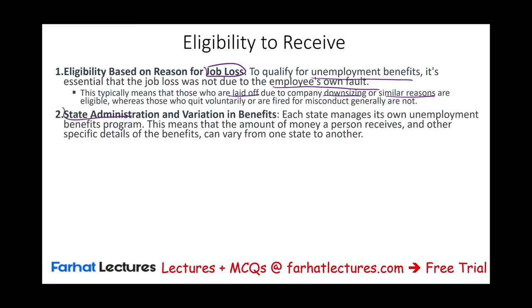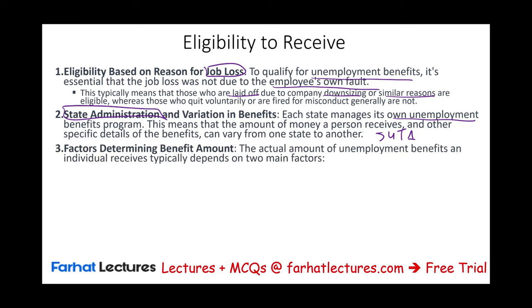It's a state-administered program, called SUTA. Each state manages its own unemployment benefit program, meaning the amount of money a person receives and other specific details can vary from state to state. The actual amount of unemployment an individual will receive depends on two factors: how long they were employed before losing their job — the longer you've been working, the more you get — and how much they were getting paid.